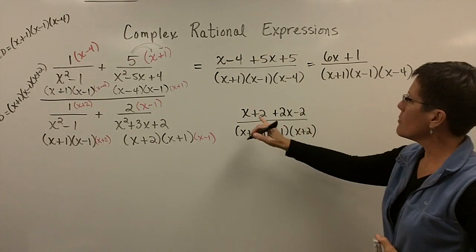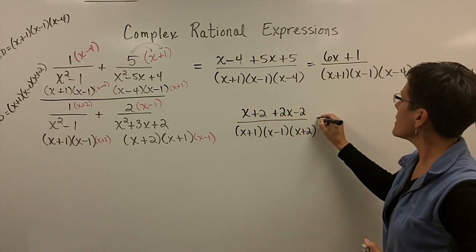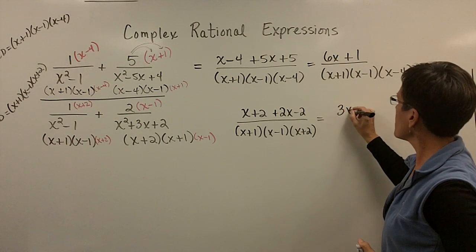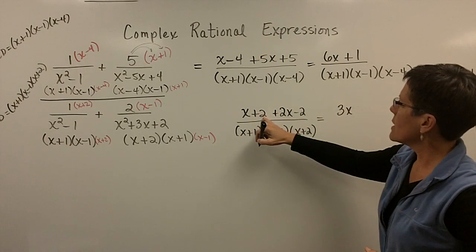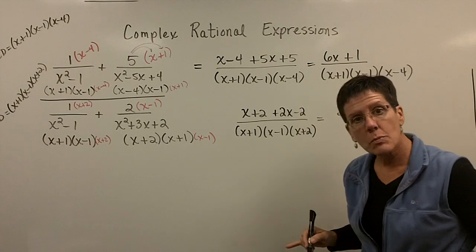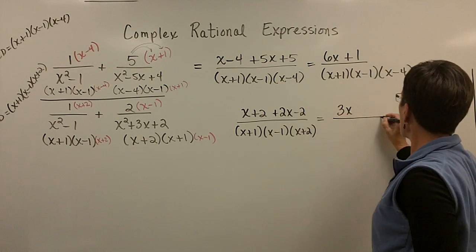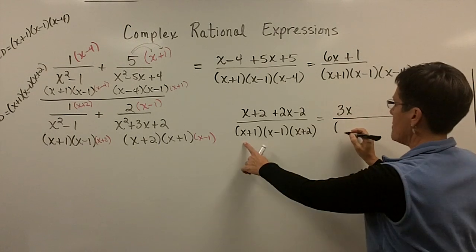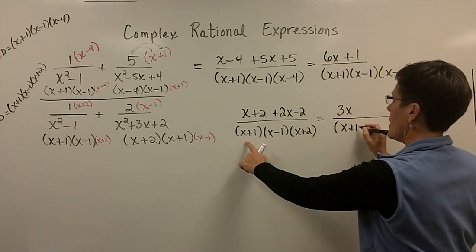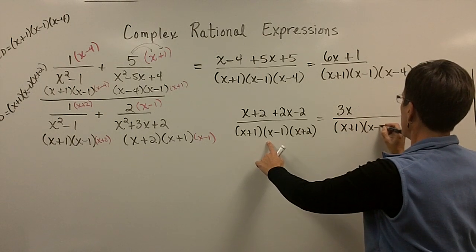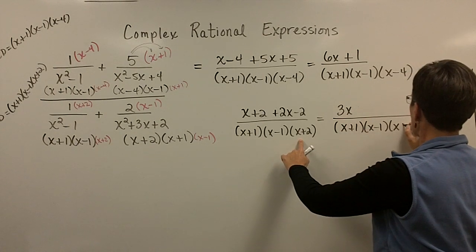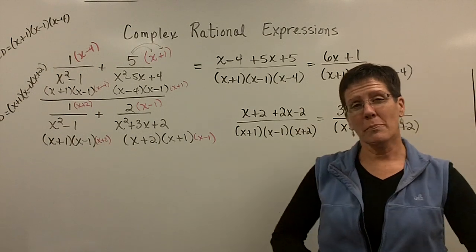So again, let's take those numerators. This one, the 1 times the x plus 2 is just x plus 2. And then right here, the 2 times the x minus 1 is 2x minus 2. And by doing that, they share this common denominator now, which is the x plus 1, the x minus 1, and the x plus 2. And upstairs, I've got to be careful. I've got to take this 1x and this 2x and add them together to call it 3x. Oh wow, interesting. And this 2 and this minus 2 adds to be 0. So I don't have to write that down. And my common denominator again is the x plus 1, the x minus 1, and the x plus 2.